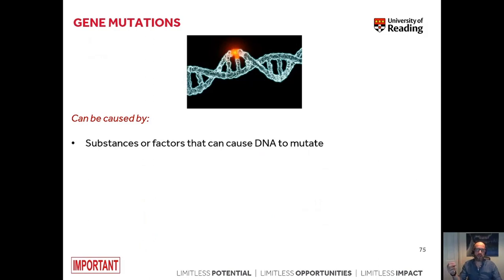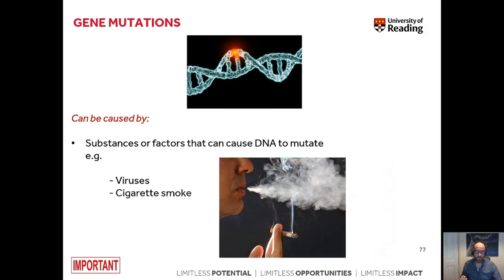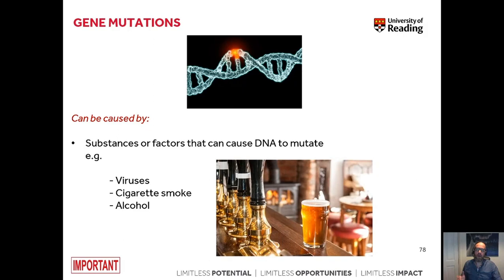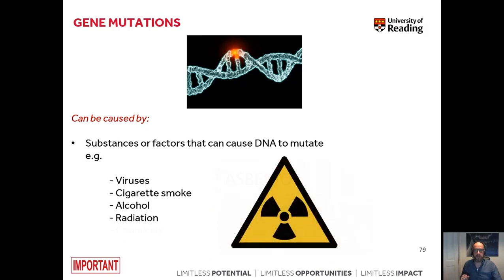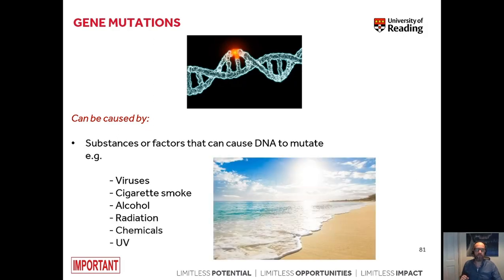Gene mutations can occur as a result of exposure to substances or factors that can cause DNA to mutate. These include infections by viruses, exposure to substances such as cigarette smoke, alcohol, radiation, different chemicals, or exposure to UV.